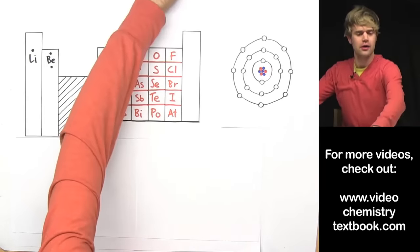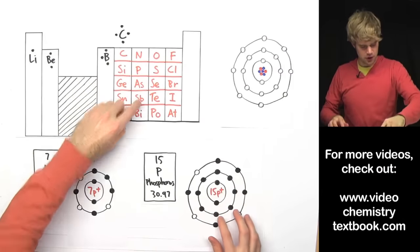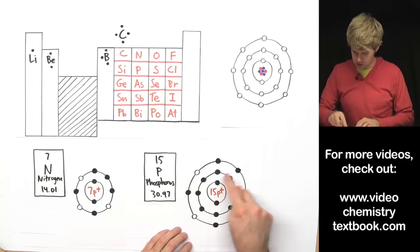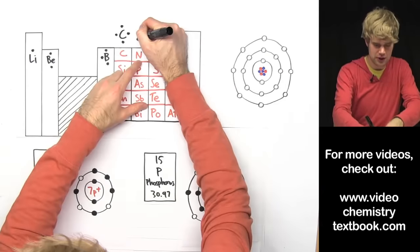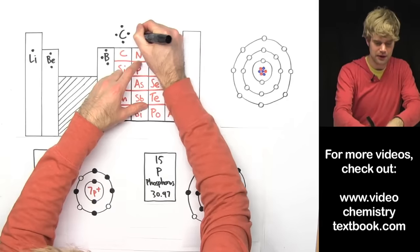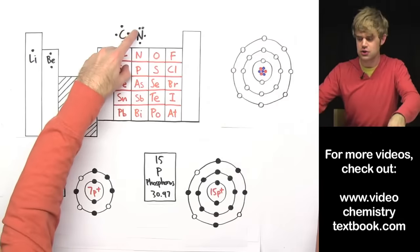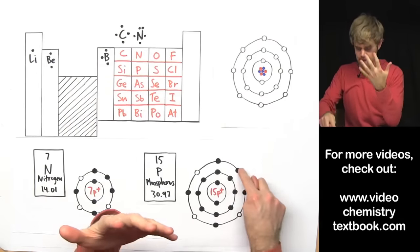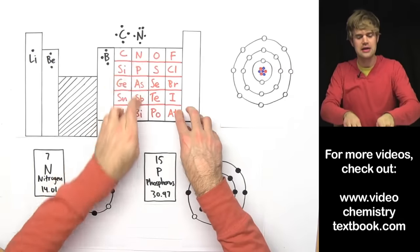Moving to the right, we've got the column with nitrogen and phosphorus and others — everything here has five valence electrons. Using nitrogen as the example, the dot diagram starts with a dot on top, bottom, left, and right, and then we double up on the top to show a pair. So there are two dots on top of the nitrogen symbol representing these five valence electrons for everything in this column.